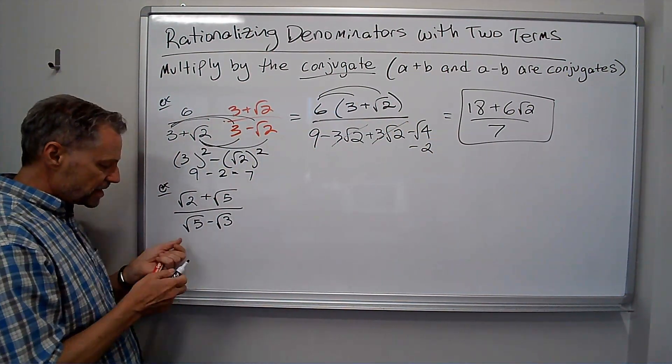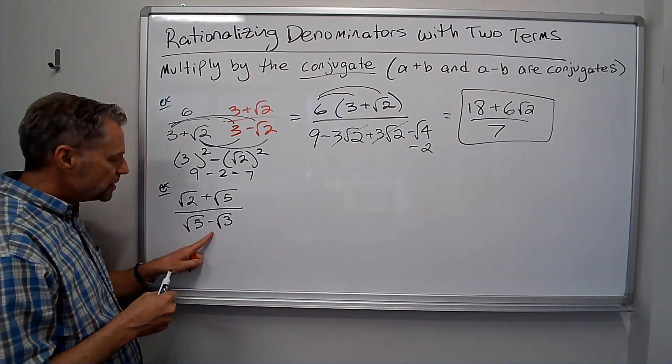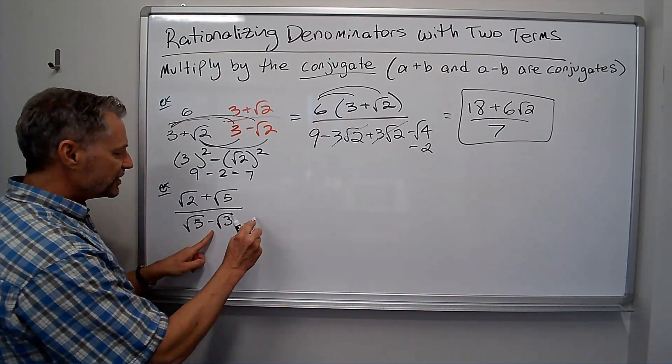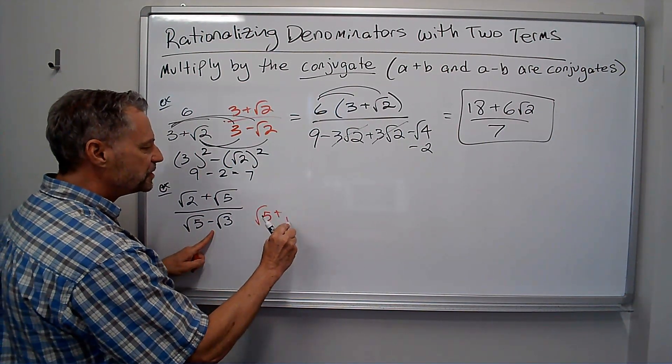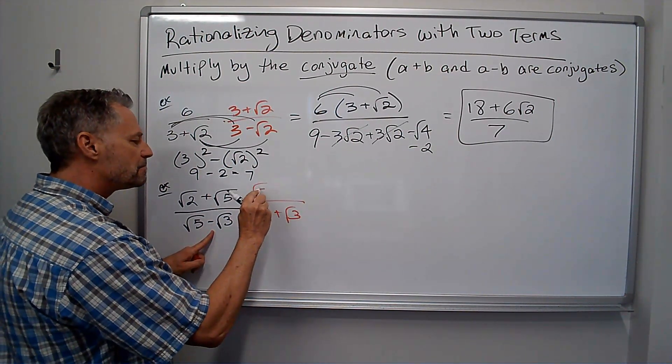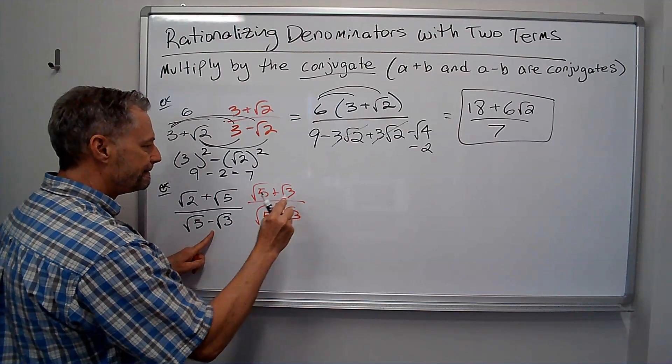Here's another one. Again, we look at the denominator. There's two terms. Change the sign in the middle, that's the conjugate. Square root of 5 plus the square root of 3. Multiply that both top and bottom. And again, we're going to foil these out.